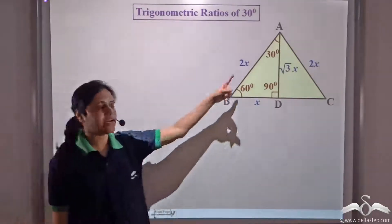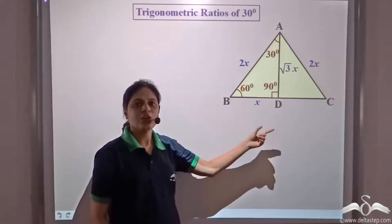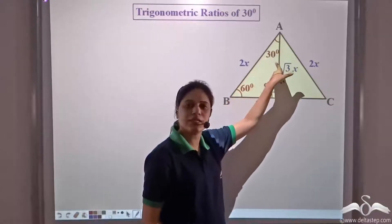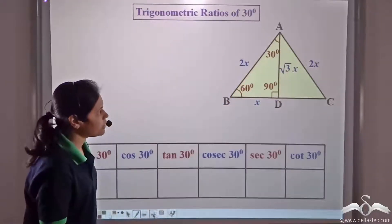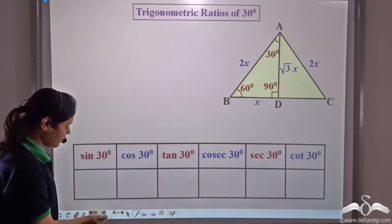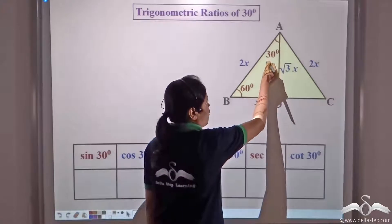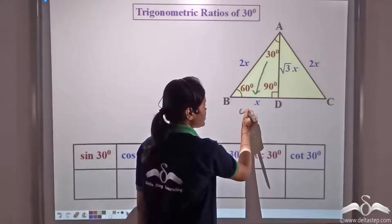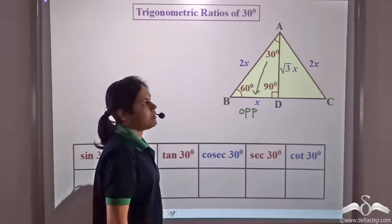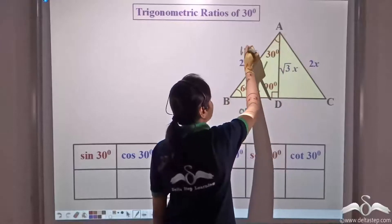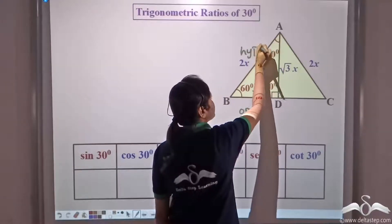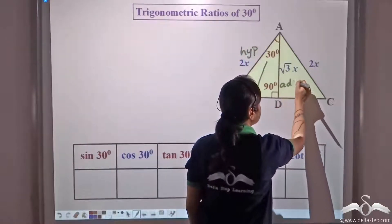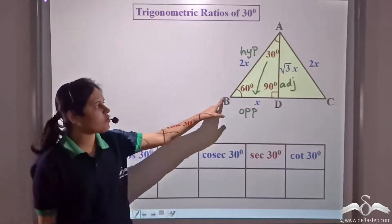Now we have all three sides of this triangle in terms of x. For the 30 degree angle, the opposite side is BD, the hypotenuse is AB, and the adjacent side is AD.